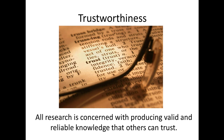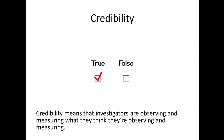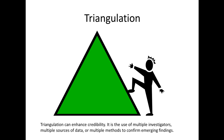We're going to look at what trustworthiness means. All research is concerned with producing valid and reliable knowledge that others can trust. One idea is that your research must be credible — credibility means that investigators are observing and measuring what they think they're observing and measuring. Another term you'll see in this area is triangulation, which can enhance credibility. Triangulation is the use of multiple investigators, multiple sources of data, or multiple methods to confirm emerging findings — ensuring your research is good by looking at it more than one way.